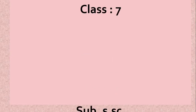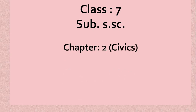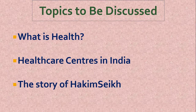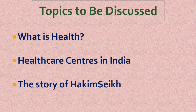Good morning friends, welcome to this class. This is Class 7th, subject Social Science, and today we are going to start Civics Chapter 2, Role of Government in Health. It is the first lecture of this chapter. Today's topics are: the meaning or definition of health, health care centers in India, and the story of Hakim Sheikh from your NCERT textbook. In this chapter we will understand how the government makes decisions to improve the health of the people.